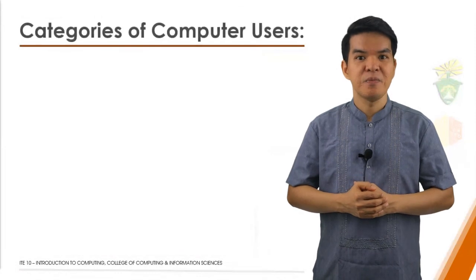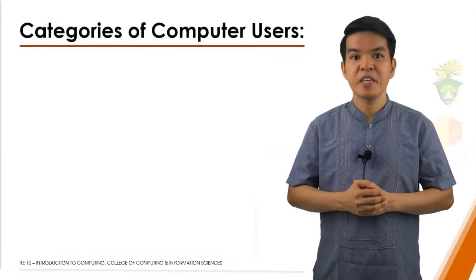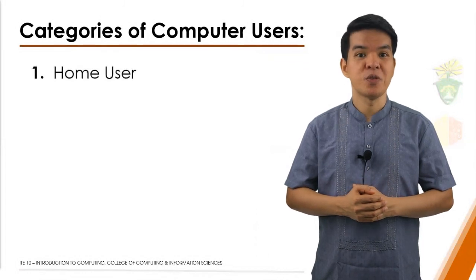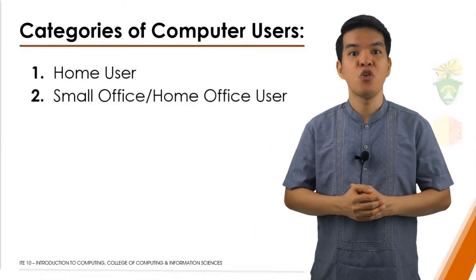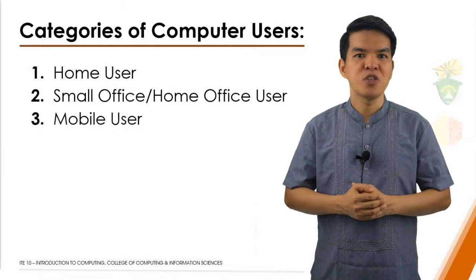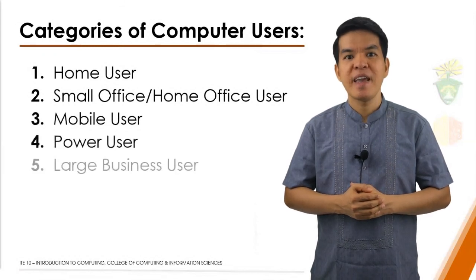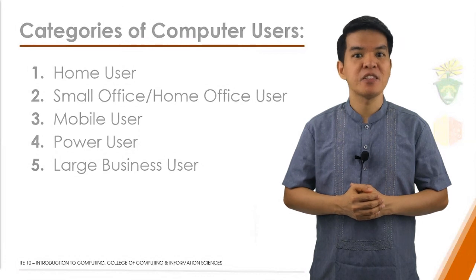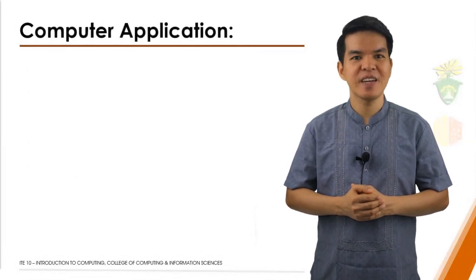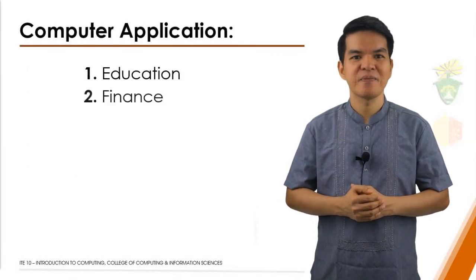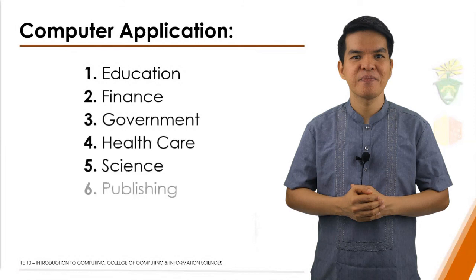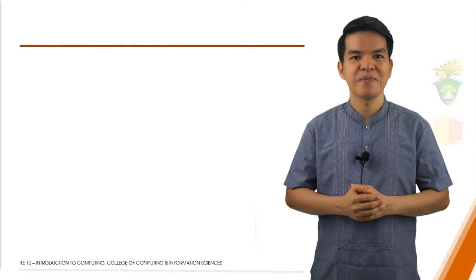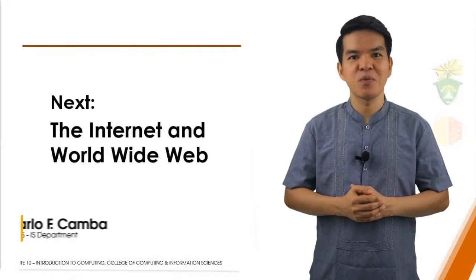In this lesson, you were able to identify the types or categories of computer users: the home user, small office or home office user, mobile user, power user, and large business user. It was also discussed the different computer applications in society. This ends your week one lessons. I hope you learned a lot about computers.